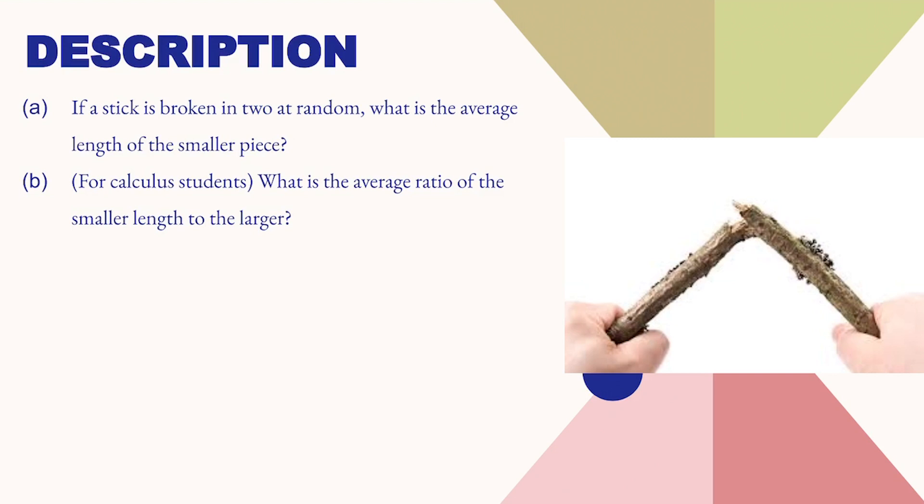In the second part of this problem, we have to find the average ratio of the smaller length to the larger length of the piece. Now, let us look at the solution.